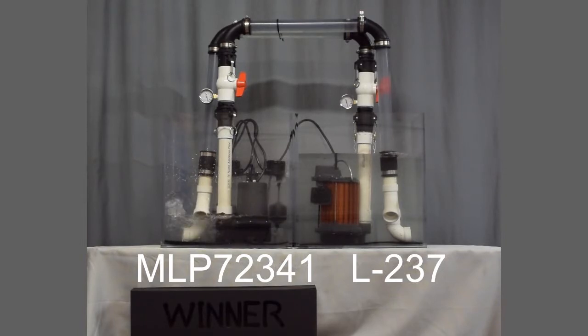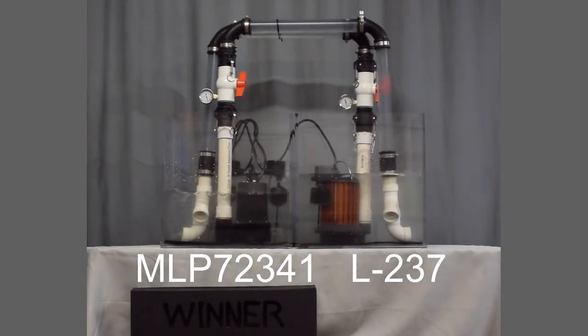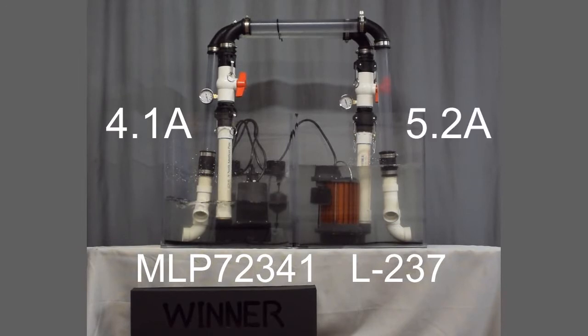You'll see pretty quickly the MLP72341 wins the competition, but what makes that even more impressive is it's drawing less amperage than the Liberty. The mainline enforcer pump is only drawing 4.1 amps versus 5.2 for the Liberty.